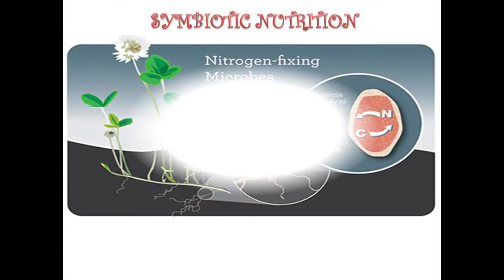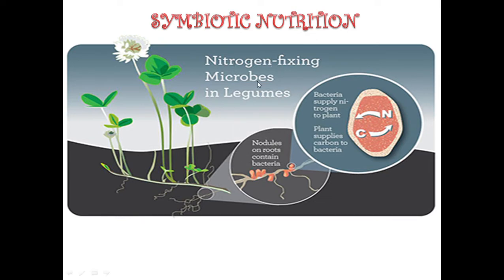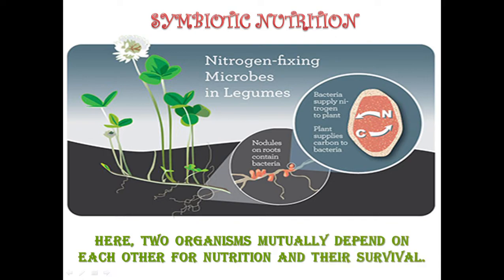Now we study symbiotic nutrition. Leguminous plants have nitrogen-fixing bacteria called Rhizobium in their roots. These bacteria provide soluble nitrogen to the plants, and in turn, the plants give the bacteria shelter. Both organisms help and depend on each other mutually — this is called symbiotic nutrition.